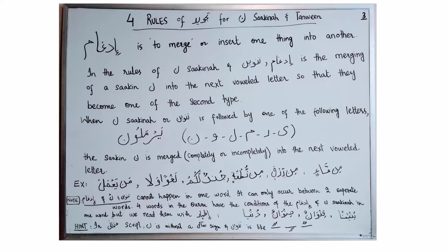Idgham of Noon Sakina and Tanween cannot occur in one word — it can only happen between two separate words, as seen in all these examples. Idgham only happens when I am continuously reciting. If I stop at the first word, I give Noon clearly. But when I continue and recite both words together, Idgham happens — only when Noon Sakina is followed by a Yermalun letter.